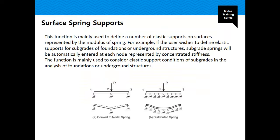Then we have the surface spring supports, which are used to define elastic supports on surfaces, represented by the modulus of subgrade reaction. You get the modulus of subgrade reaction from your geotechnical engineer, and then the program can distribute the soil springs throughout the entire surface. It can do this in two ways: convert to nodal spring, where spring supports are assigned to the nodes, or distributed spring, where the spring is assigned to the entire element — whether it's a plate, a frame element, a mat foundation, or a beam foundation.